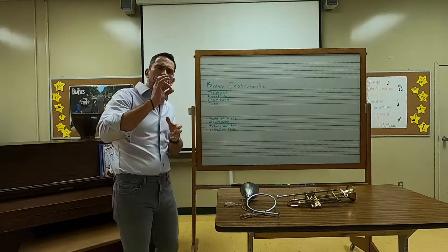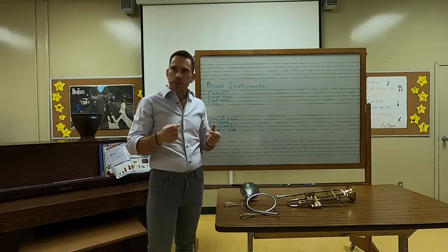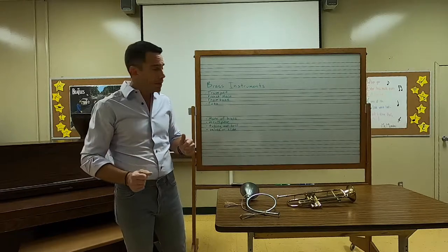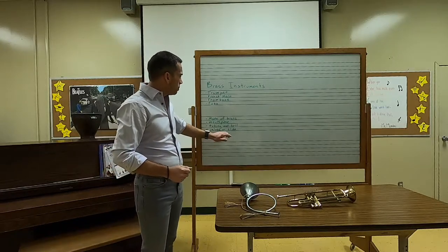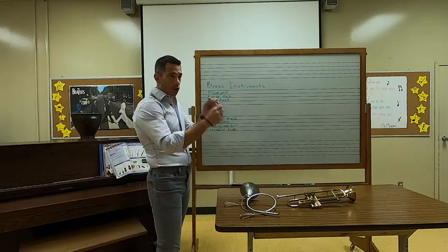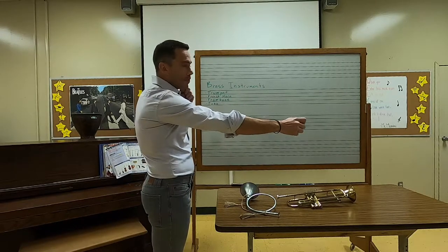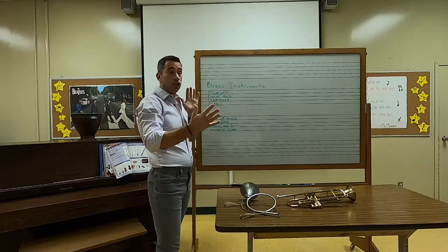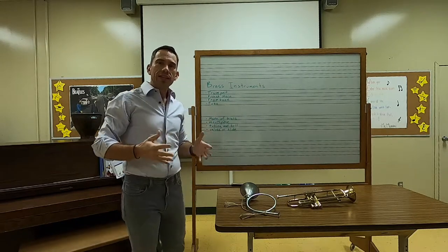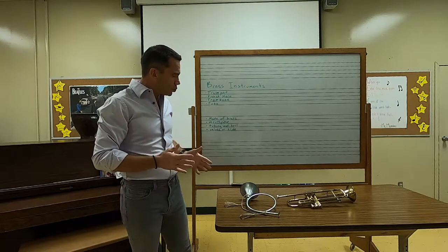Brass instruments also have valves or a slide to change the pitch. You push the valves down and they redirect the air into different tubes — longer ones and shorter ones — and that's how you change the pitch. But the trombone has a slide; it's kind of special. You slide it out and it gets longer, so it gets lower. When you slide it back in it gets shorter, so it gets higher again.